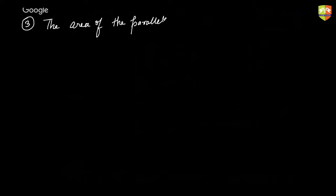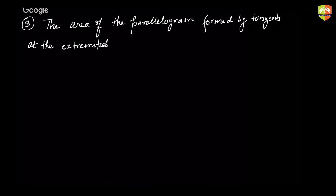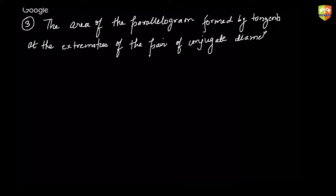Next property: the area of the parallelogram formed by tangents at the extremities of a pair of conjugate diameters is 4ab square units. Please prove this.